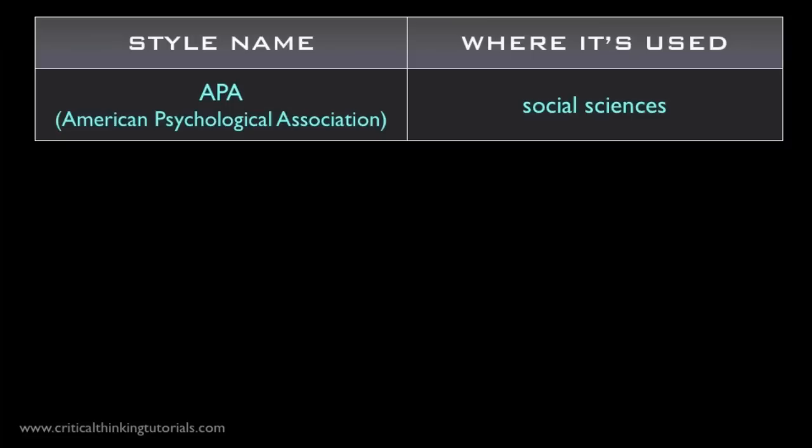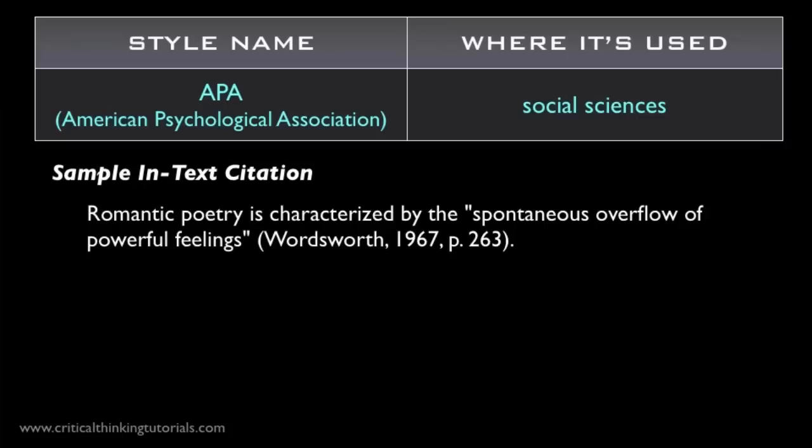APA stands for American Psychological Association. The first APA style manual came out in 1927, and was designed to serve the writing needs of psychologists and anthropologists, but the APA style is now widely used across the social sciences, and there are branches of the humanities that use this style as well. If you were to write the Wordsworth citation in APA style, it would look like this. APA style uses the author and the date of publication, rather than the author and page number, though page number references are often included as well.